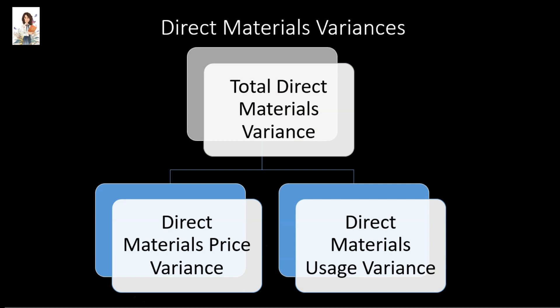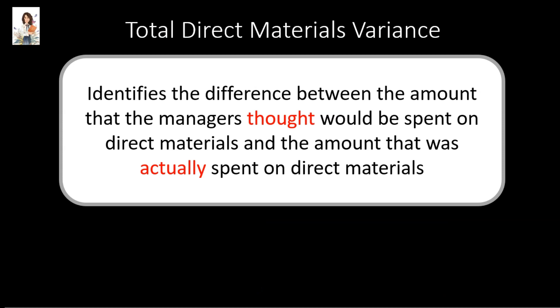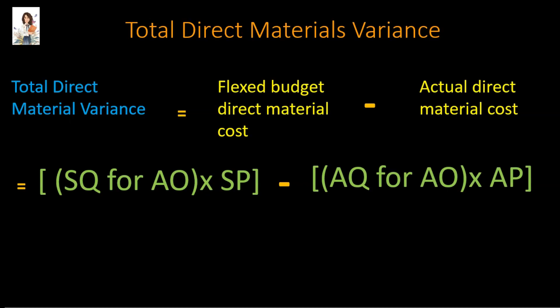Let us first understand the direct material variances. The variance on the direct materials cost can be due to two things: either the company has purchased materials at a higher or lower price than was set in the budget — this is called the direct materials price variance — or the company may have used more or less material than was budgeted, and this is called the direct materials usage variance. Total direct materials variance identifies the difference between the amount that the managers thought would be spent on direct materials and the amount that was actually spent. The formula is: flexed budget direct material cost minus actual direct material cost.